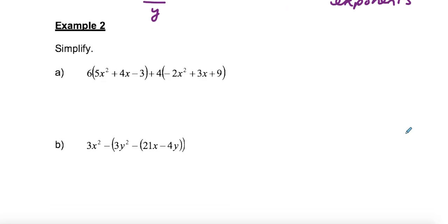Example 2, you probably remember the distributive property. I have no terms inside the brackets that are alike, so I can't simplify what's inside the brackets. So my next step then would be to multiply all of those terms by 6 and all of these terms by 4.